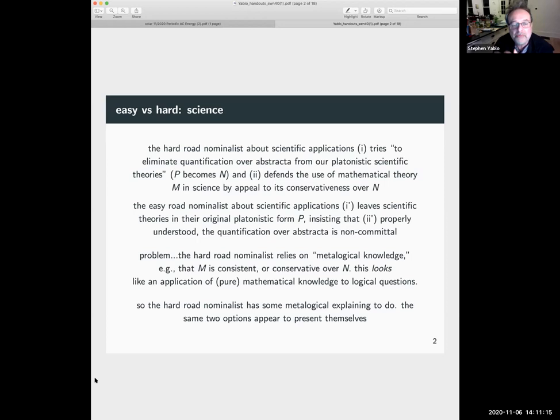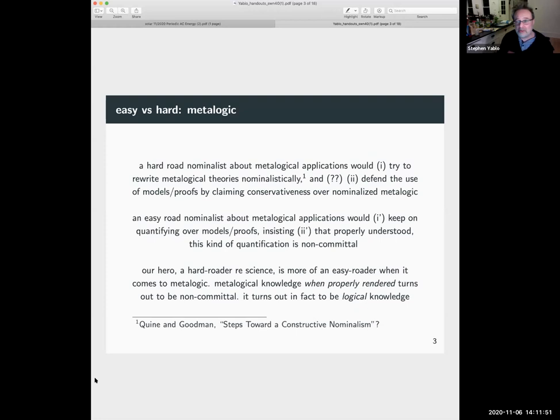So prima facie problem which is really only dealt with later by Hartree in some amazing papers: the hard road nominalist relies on metalogical knowledge, e.g. that the mathematical theory is consistent or that it's conservative over the nominalistic theory and this looks like an application of pure mathematical knowledge to logical questions. So the hard road nominalist has some explaining to do and the same two options appear to present themselves.